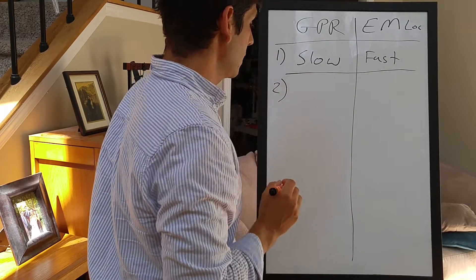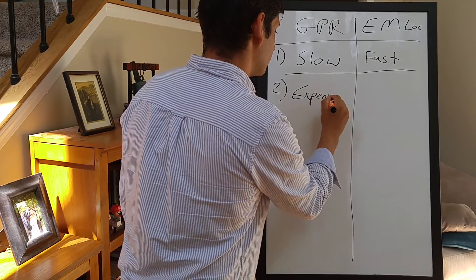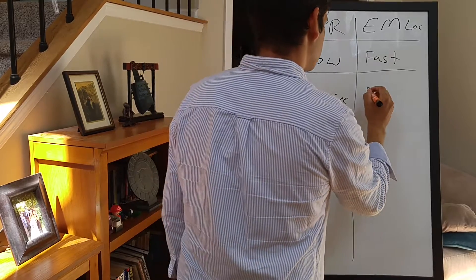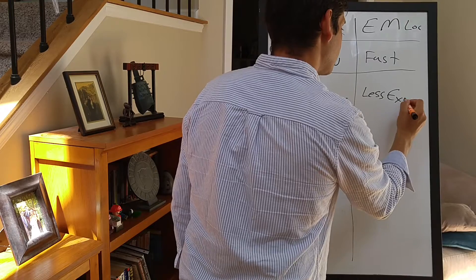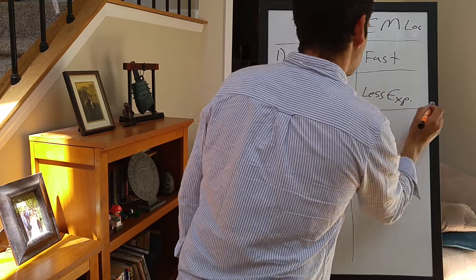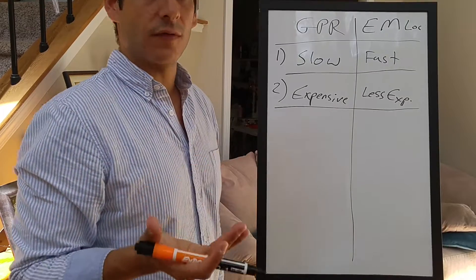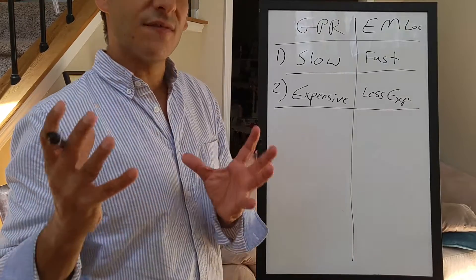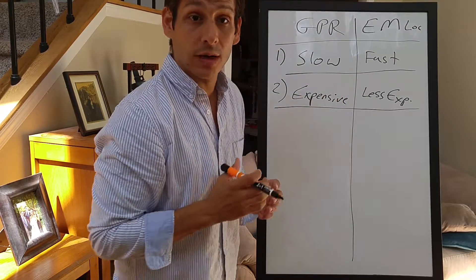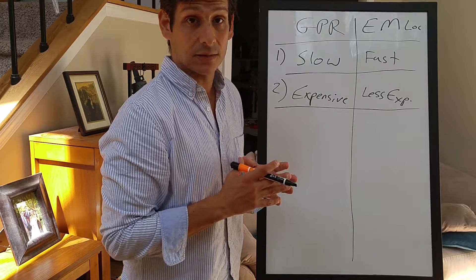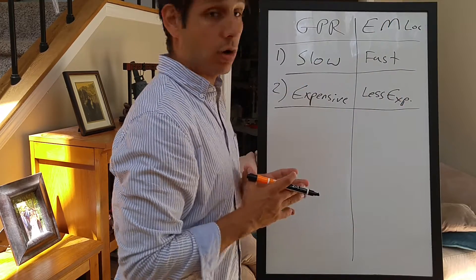Number two: price. GPR is expensive, while EM locators are much less expensive. Traditional GPR equipment can go anywhere from $12,000 or $15,000 up to $35,000. However, very good EM locators might cost $5,000 to $7,000. So they're significantly less expensive than GPR units.